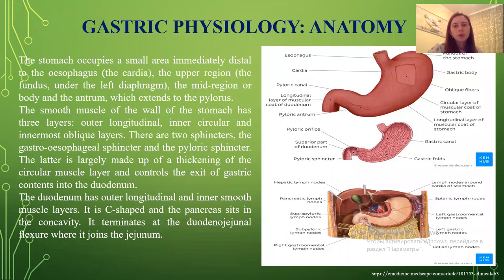Some information about anatomy. The stomach occupies a small area immediately distal to the esophagus, with the upper region, the middle region of the body, and the antrum, which extends to the pylorus. The smooth muscle of the wall of the stomach has three layers: outer longitudinal, inner circular, and innermost oblique layers. The two sphincters are the gastroesophageal sphincter and the pyloric sphincter. The pyloric sphincter is largely made up of the thickening of the circular muscle layer and controls the exit of gastric contents into the duodenum.